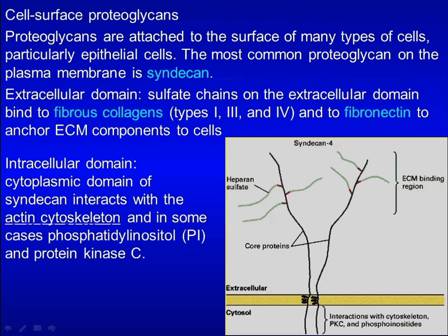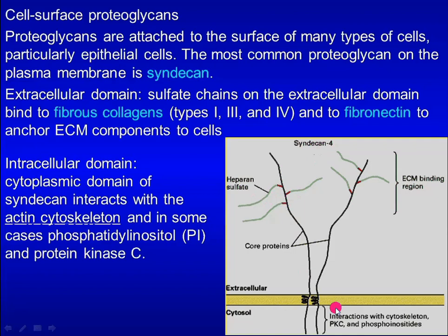Proteoglycans are attached to the surface of many types of cells, especially epithelial cells. The most common proteoglycan on the plasma membrane is syndecan. Sulfated glycosaminoglycans on the extracellular domain bind to fibrous collagen and to fibronectin to anchor the extracellular matrix to the cells. The cytoplasmic domain of syndecan interacts with the actin cytoskeleton.